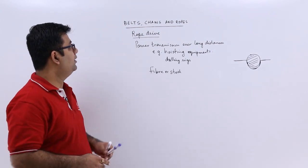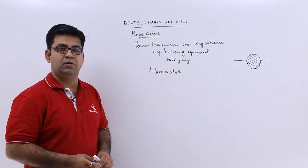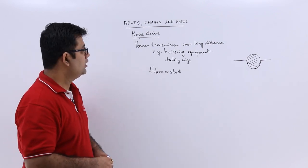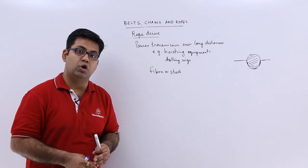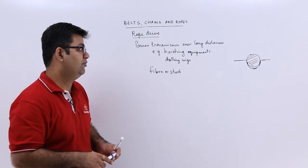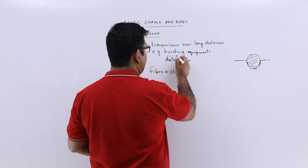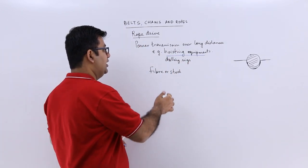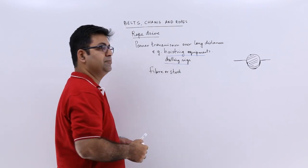Now let's come to the last part of this video series on belts, chains and ropes and talk about the rope drive. Rope drives or ropes are used for power transmission over long distances. For example, they are mostly used in hoisting equipment, cranes, and drilling rigs.